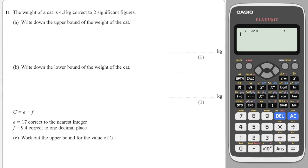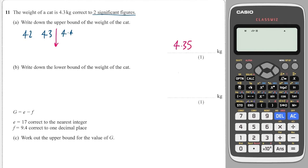The technique I use for these types of questions is I write 4.3 in the middle. If I'm only using two significant figures, the next biggest number I can possibly write would be 4.4, and the smaller one going downwards would be 4.2. The upper bound is halfway between those two values, so it's 4.35. And the lower bound is halfway between those two values, so it's 4.25.